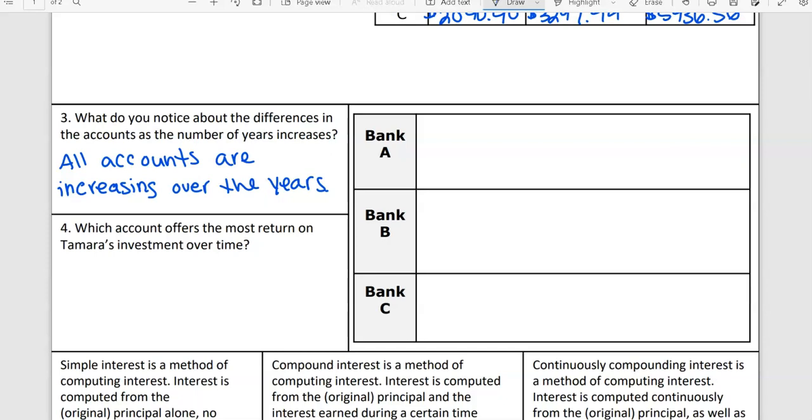Which account offers the most return on Tamara's investment over time? We think it's C. How is bank A changing? Bank A just goes up like a thousand every 25 years. So it's a thousand every 25. What is that each year? It's going to be $40 each year. Yep, so this bank earns a constant interest of $40 a year.